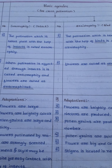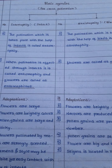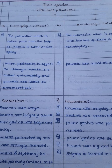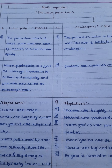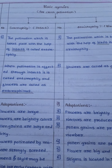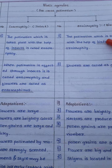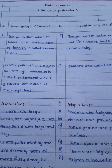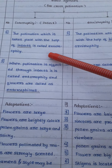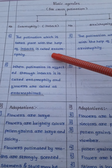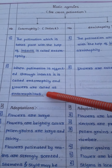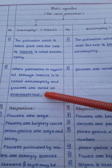Hello students, today we study about biotic agencies for cross pollination. Biotic agencies means living agencies — it may be insect, bird, or bat. The pollination which takes place with the help of insects is called entomophily, and such flowers are called entomophilous.